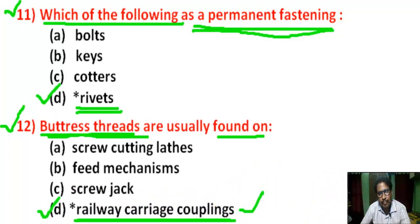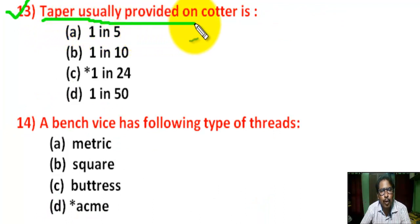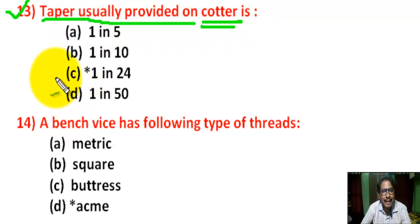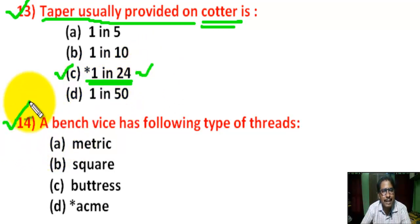Question number 13: taper is usually provided on a cotter. There are 4 options. Correct answer is C: One in 24.